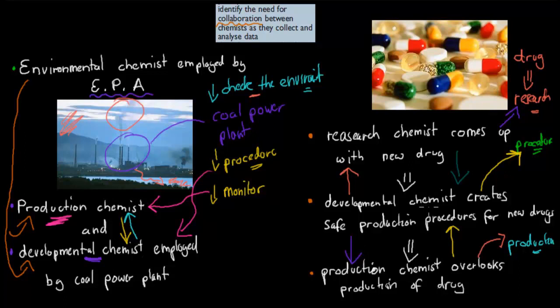This collaboration happens usually on a massive scale, and these are just a couple of examples — there are more. Generally, a chemist doesn't work alone; a chemist works in a team. There are different types of chemists who specialize in different areas, and they all come together to make a new product or idea become reality. So that's why we identify the need for collaboration between chemists as they collect and analyze data.